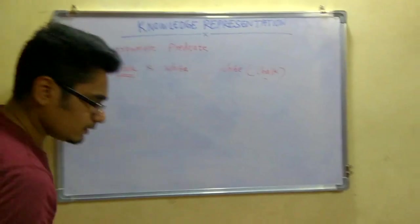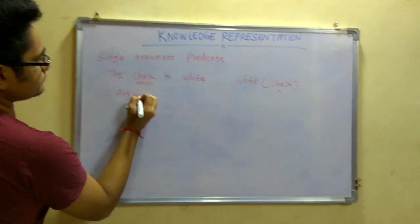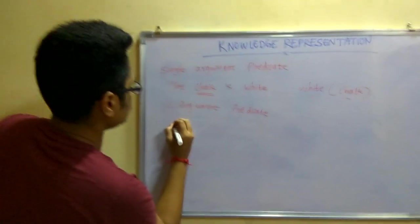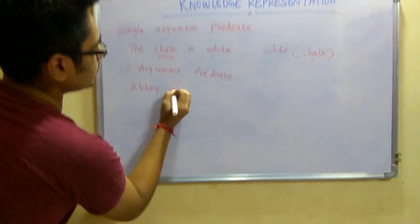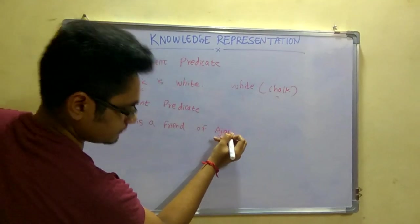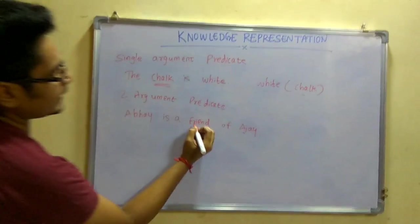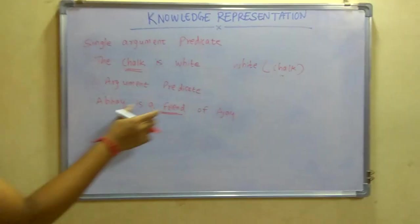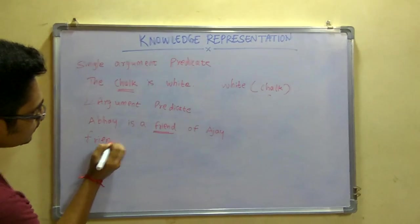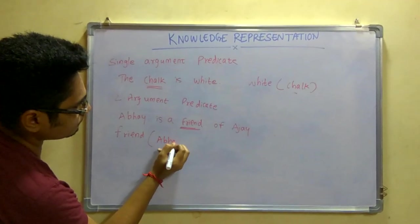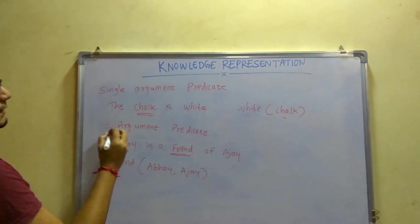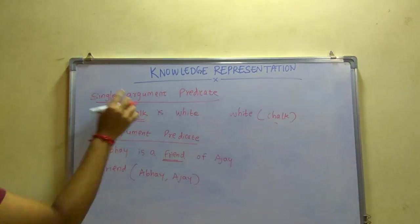Next is the two argument predicate. The statement would be 'Abhay is a friend of Ajay.' Here 'friend' is the connecting link between Abhay and Ajay, so we write friend(Abhay, Ajay). Since there are two arguments, this is a two argument predicate.